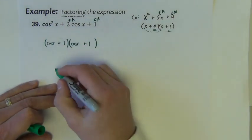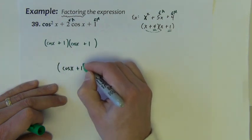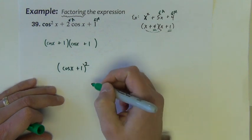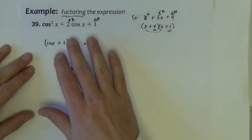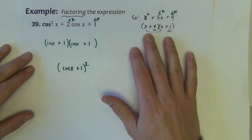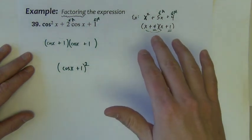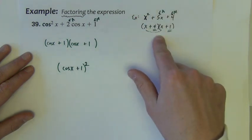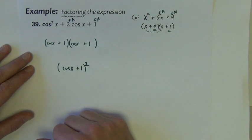Since the binomials are the same, we could of course write it as cosine x plus 1 squared. So there you go. There's an introduction into using factoring. Using something that we have done and been doing for a lot of years. Dating back to like algebra 1, algebra 2, pre-calculus. Just factoring of trinomials. We can extend that knowledge base to trig expressions.